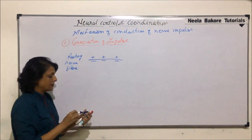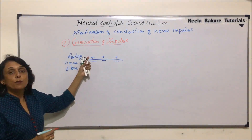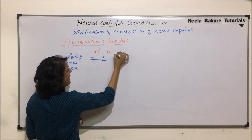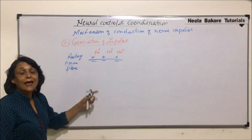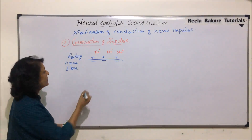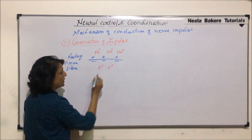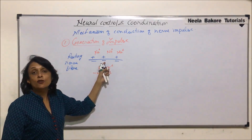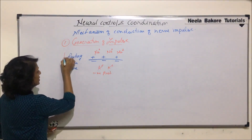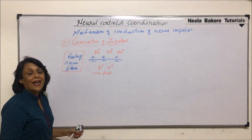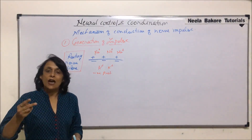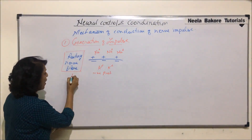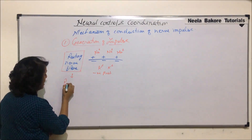The membrane is electronegative on the inner side. This electropositive nature is due to the presence of many sodium ions on the outer side, and there are many potassium ions on the inner side. Inside are potassium ions and negative proteins. Because of these negative proteins, the membrane is electronegative on the inner side. Since the nerve fiber has opposite charges on its two surfaces — outer is electropositive, inner is electronegative — we call such a resting membrane as polarized.